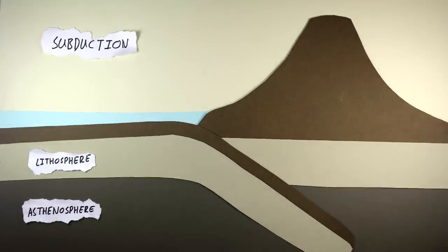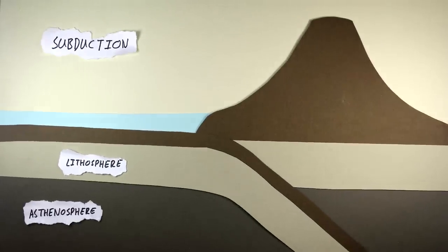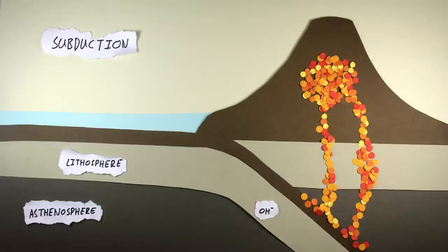And subduction. This is the process where tectonic plate movement drives a denser plate underneath another. With it, water and other volatile substances are carried into the Earth. It's the presence of these volatiles, such as water and carbon dioxide, that lower the melting temperature of the subducting plate. They do this by interrupting the structure of the rock on an atomic level, present as hydroxyl and carbonate ions.